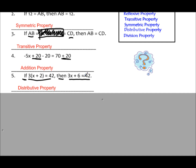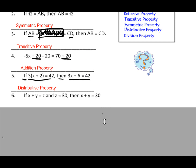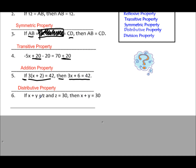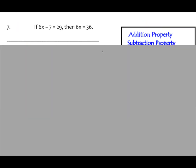You're not usually used to seeing equations written in if-then form, but in geometry we do a lot of that. Number 6 is a little tricky: if x plus y equals z, and z equals 30, then x plus y equals 30. If you notice, the z's were back-to-back. When they were eliminated, we were left with the first and third term equal to each other. That's our transitive property.